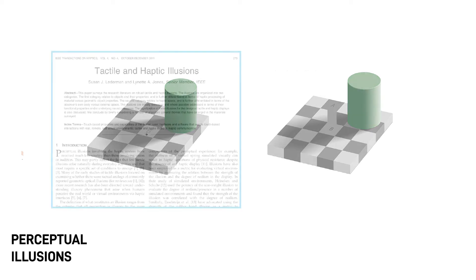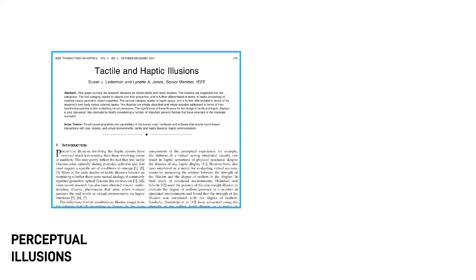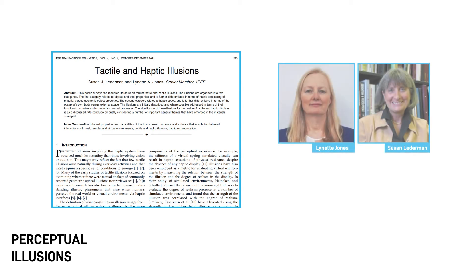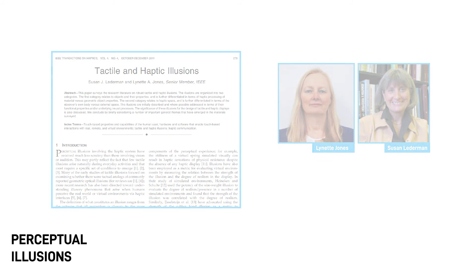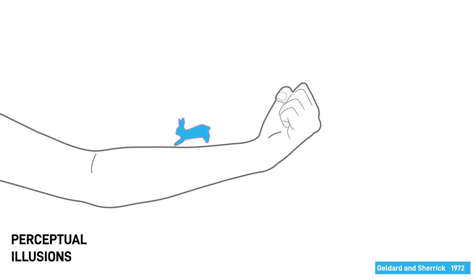Many haptic illusions have been discovered, too. You can find an extended review of these illusions in a 2011 paper by Lederman and Jones. Some haptic illusions do not require a complex setup to be experienced. For example, in the cutaneous rabbit illusion, when two or more locations on the wrist to forearm are repeatedly tapped in a quick succession, the person feels hops regularly progressing along the forearm. Similarly, there are many illusions of weight.